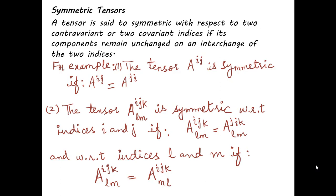The first type is symmetric tensors. A tensor is said to be symmetric with respect to two contravariant or two covariant indices if its components remain unchanged on an interchange of the two indices. For example, if a contravariant tensor aij is symmetric, then aij equals aji. So if we interchange the indices, the components are equal: a12 equals a21, a13 equals a31, and so on. Then we say the tensor is a symmetric tensor.